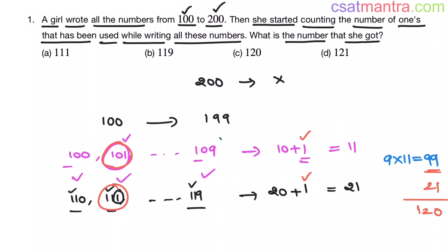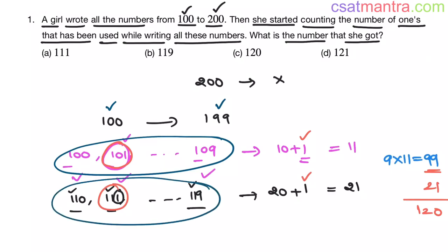Now how many such sets are there from 100 to 199? There are 9 sets. So 90 numbers, that means 9 sets. So 9 into 11, that is 99. When it comes to this set, we have 21 ones. So in total 120.